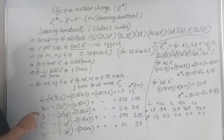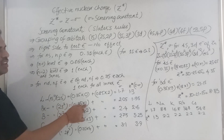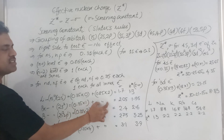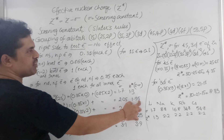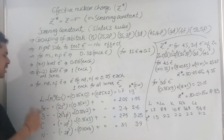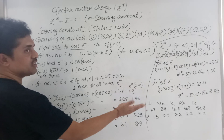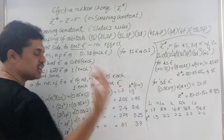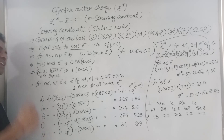For beryllium, 1s² 2s²: with one test electron removed, 1 remaining electron gives 1 × 0.35 = 0.35; the 1s² part gives 2 × 0.85 = 1.7. So sigma = 2.05 and Z star = 4 − 2.05 = 1.95. From lithium to beryllium, Z star increased from 1.3 to 1.95. Increasing effective nuclear charge decreases the atomic radius and increases ionization potential, electronegativity, and electron affinity.